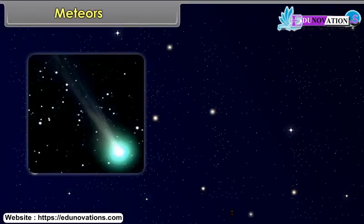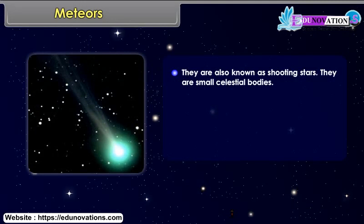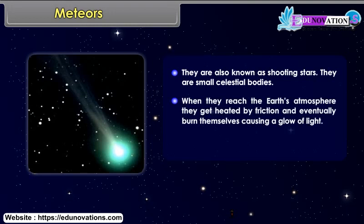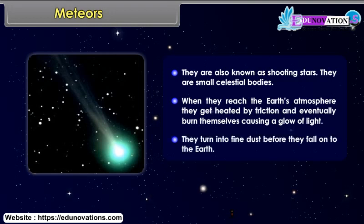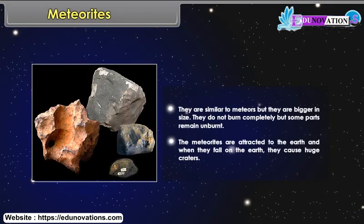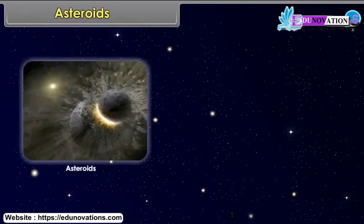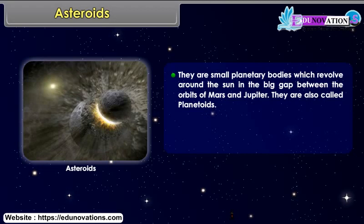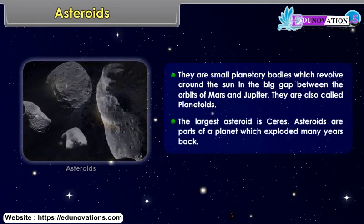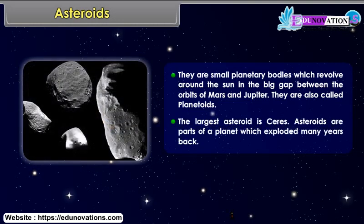Meteors are also known as shooting stars. They are small celestial bodies. When they reach the Earth's atmosphere, they get heated by friction and eventually burn themselves, causing a glow of light, and turn into fine dust before falling onto the Earth. Meteorites are similar to meteors but bigger in size. They do not burn completely, and when they fall on the Earth, they cause huge craters. Asteroids are small planetary bodies which revolve around the Sun in the big gap between the orbits of Mars and Jupiter. They are also called planetoids, and the largest asteroid is Ceres.